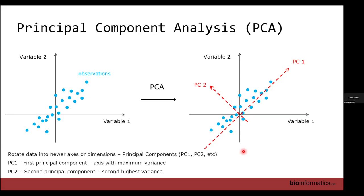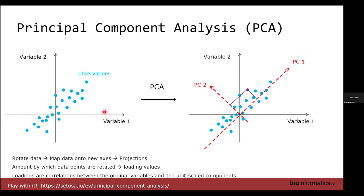So the data originally had variable one and variable two. PCA just rotates the data so you can see how the spread is going. The mapping is done onto newer axes through certain matrix operations and the data is projected. For instance, a point that was at coordinates two, two-point-five in the original space now has a different value in the new axes.